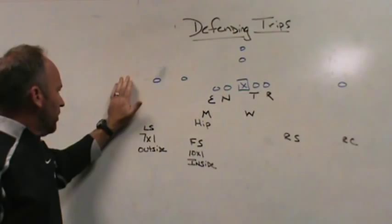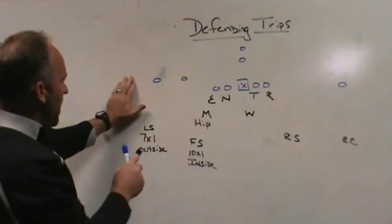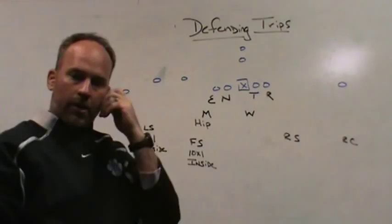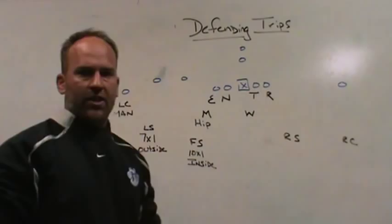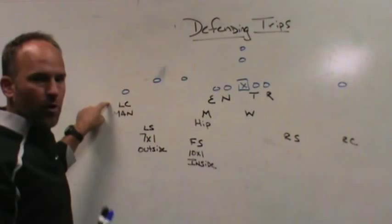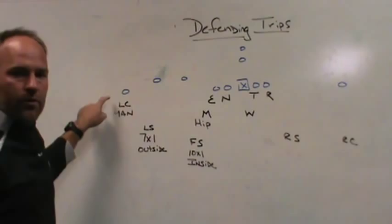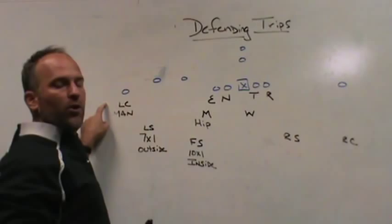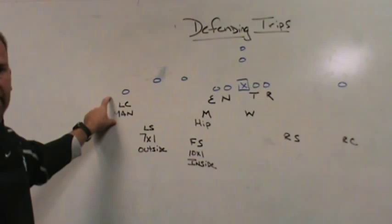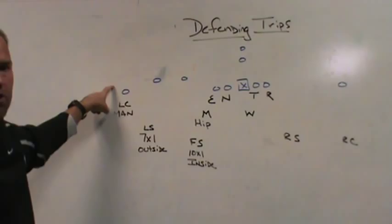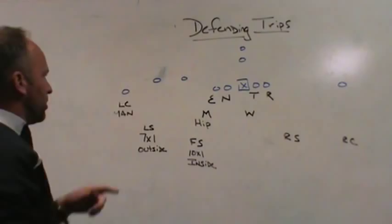Once you X-out a receiver — like we do by playing man on number one in trips — the formation essentially becomes 2x1, and now the rest of my defenders can play that formation the same way we always play 2x1 sets. It's an X-out concept that we call Mixed Coverage. We're going to play man on the number one receiver to the trip side. My logic is that if you do enough film study, the trips number one receiver does not get the football a lot of the time. If you're playing a team that likes to expose number one in trips, maybe you don't want to be in that concept. Also, playing number one up hard aggressively takes away some of the stand-up screens and quick throws that teams may like to exploit in trips coverage.